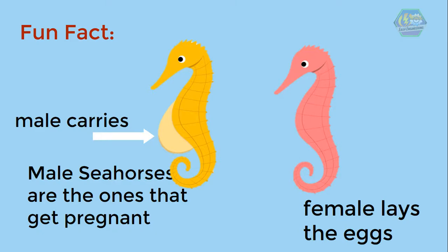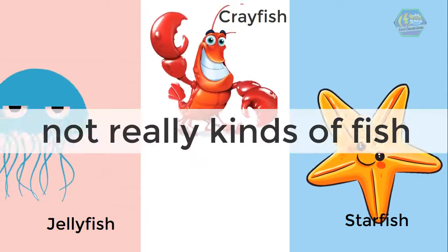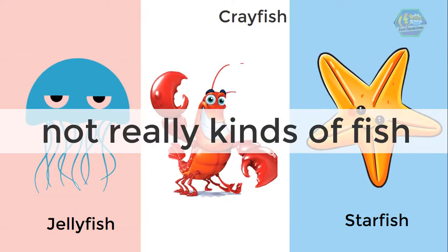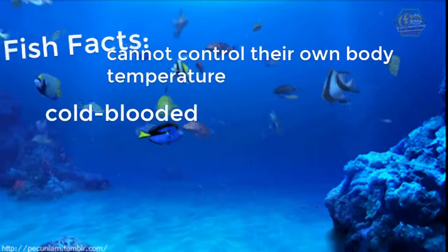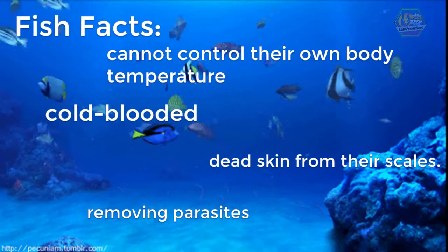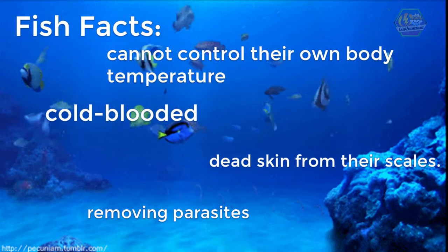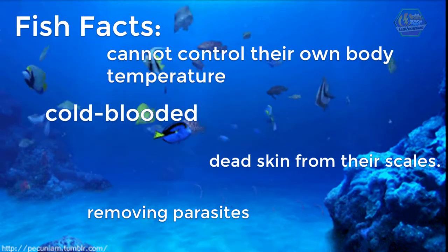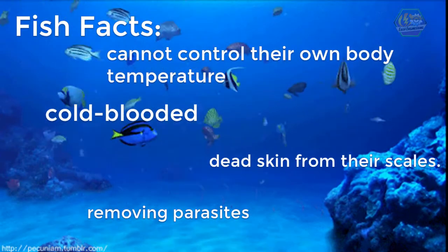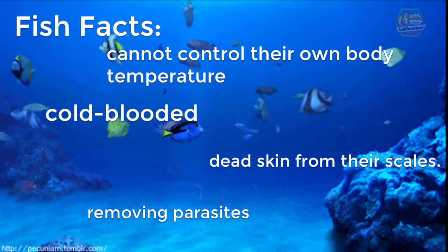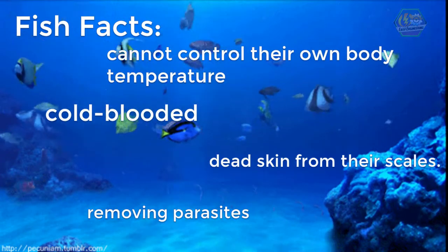While we call jellyfish, starfish, and crayfish "fish," they are not really kinds of fish. Now for some more fish facts: did you know that fish are cold-blooded and cannot control their own body temperature? Some fish actually help each other by removing parasites and dead skin from their scales.